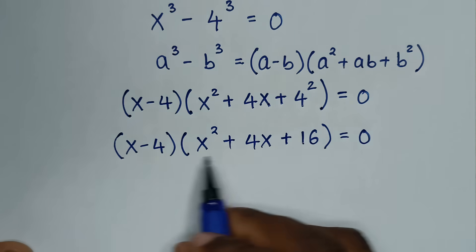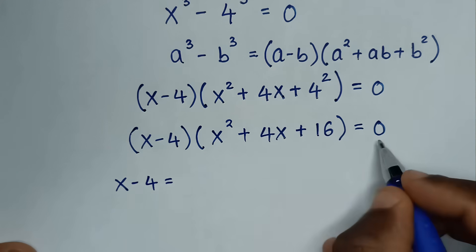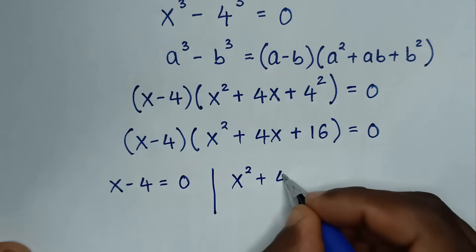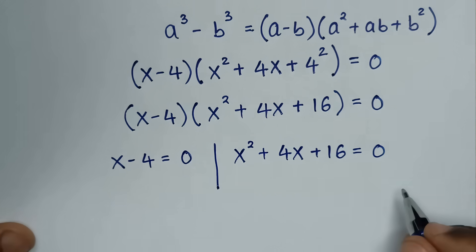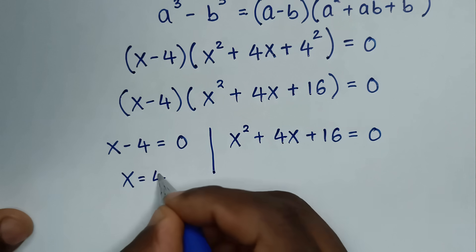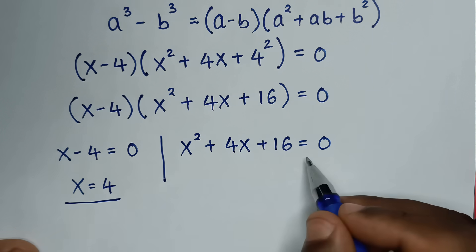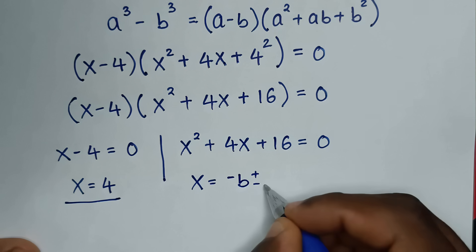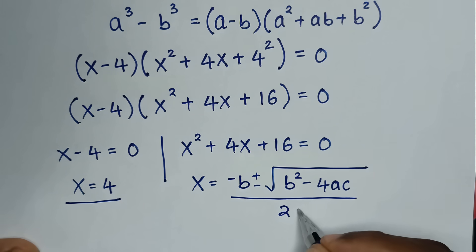From here, x minus 4 equals 0, giving x equal to 4. This is the first value of x. From the second factor, x squared plus 4x plus 16 equals 0 — this is a quadratic equation. Using the quadratic formula: x equals negative b plus or minus square root of b squared minus 4ac, over 2a.